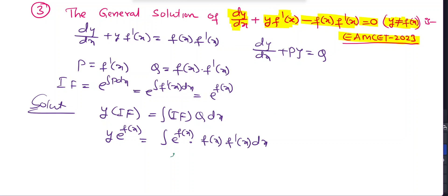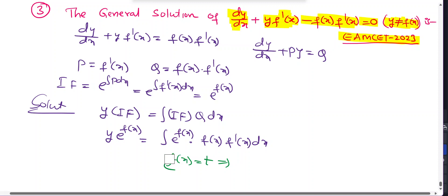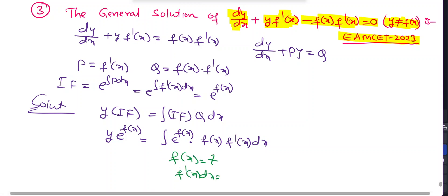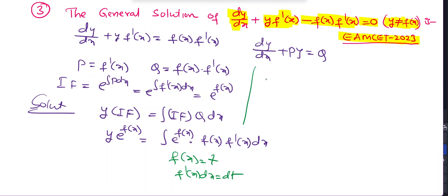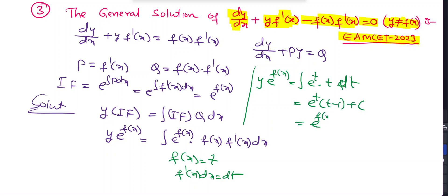Take f(x) = t, so f'(x) dx = dt. Substituting: y·e^(f(x)) = ∫eᵗ·t dt = eᵗ(t - 1) + C. Substituting back t = f(x): y·e^(f(x)) = e^(f(x))·(f(x) - 1) + C.